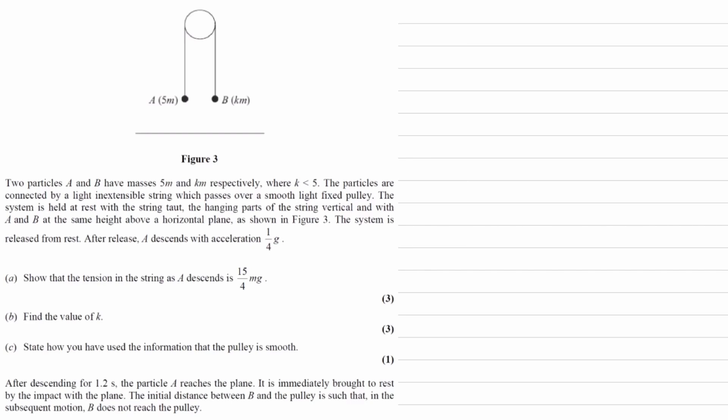We have two particles, A and B. We're given their masses, so I'll draw in the weights. A has a weight of 5mg, and B has a weight of Kmg.